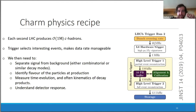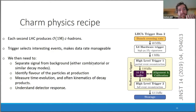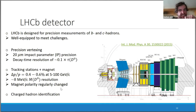In the LHCb upgrade, which is being finalized now, we've gotten rid of the hardware trigger, which will allow more efficient triggering of signal events. Once data is collected, we need to separate signal from backgrounds, identify the flavor of charm mesons at production, measure the time evolution and kinematics of decay products, and understand how the detector response might bias these. The LHCb detector is designed for precision measurements of beauty and charm hadrons.